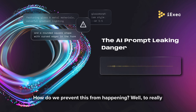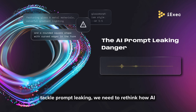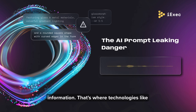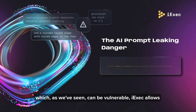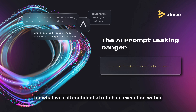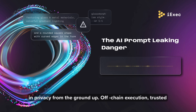So how do we fix it? To really tackle prompt leaking, we need to rethink how AI is executed, especially when dealing with sensitive information. That's where technologies like iExec Confidential AI come in. Instead of running AI models in typical cloud environments, which can be vulnerable, iExec allows for what we call confidential off-chain execution within trusted environments. Think of it as AI with built-in privacy from the ground up.